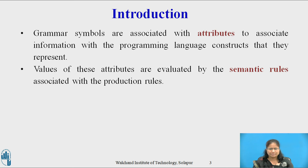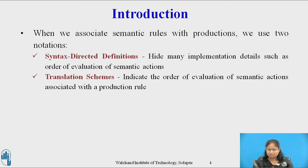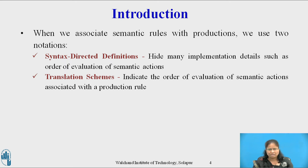We associate the information with the programming language construct by attaching attributes to the grammar symbol representing that construct. The values of these attributes are evaluated by the semantic rule associated with the production rule. When we associate the semantic rule with the production, we use two notations: Syntax Directed Definition and the translation scheme. Syntax Directed Definition gives high-level specification for translation and hides many implementation details such as order of evaluation of semantic action. We associate a production rule with the set of semantic actions and we do not say when they will be evaluated.